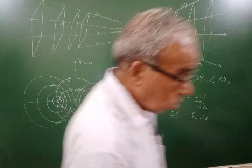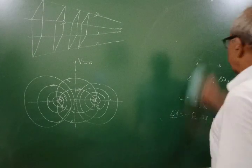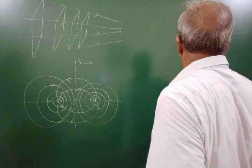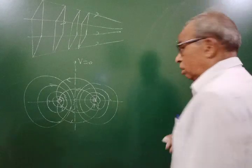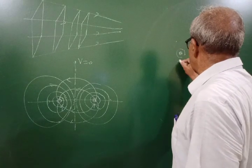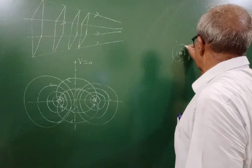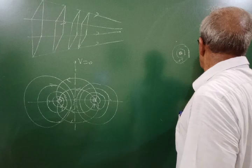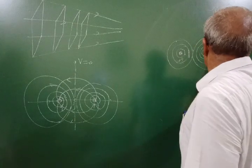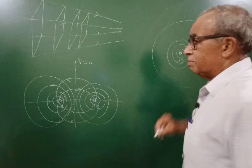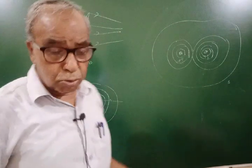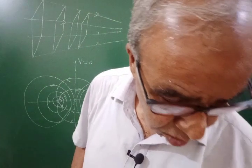If we have two equal like charges, both Q, the shape of the equipotential surfaces changes. The electric field is zero at the midpoint between them, but the potential is not zero. At close range, each charge has its own roughly spherical equipotential surfaces. For a large distance, the two-charge system will behave like a single point charge, and they will have a common equipotential surface at large distance.